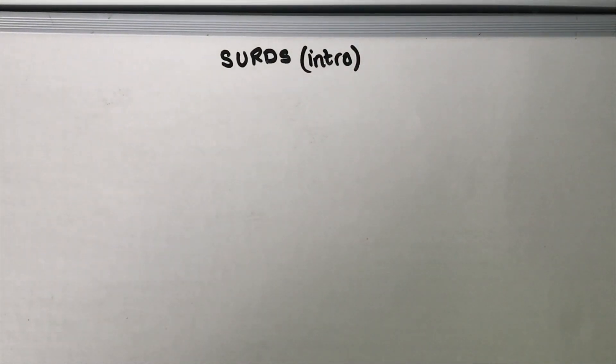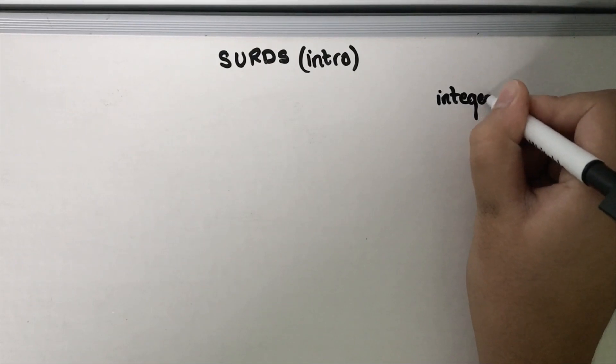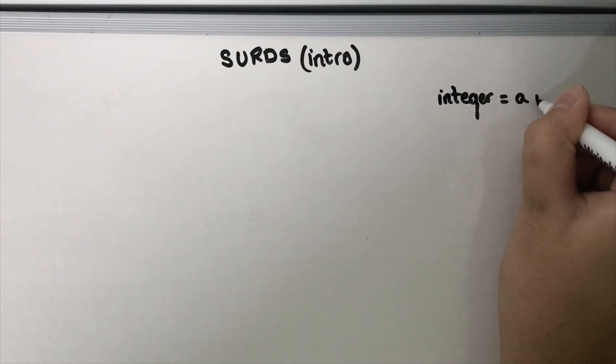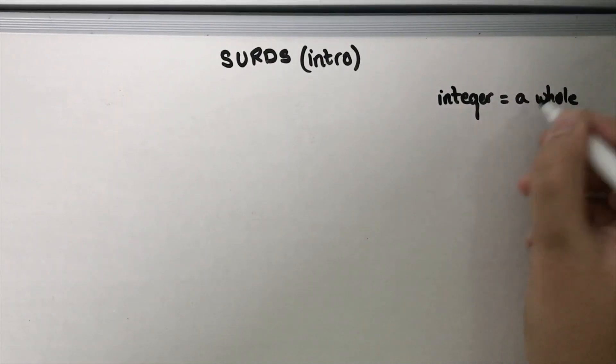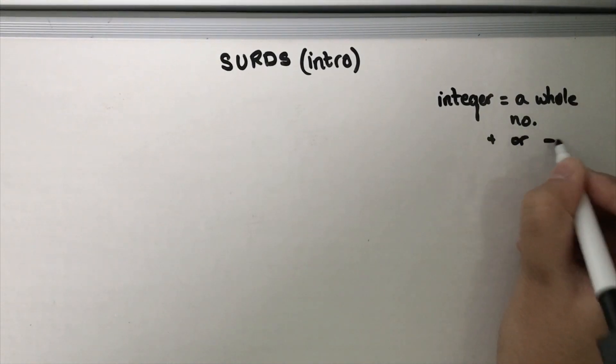Now to start with, let's look at what is a surd. A surd is a root number that when simplified does not become an integer, and we should remember that an integer is a whole number that is either positive or negative.